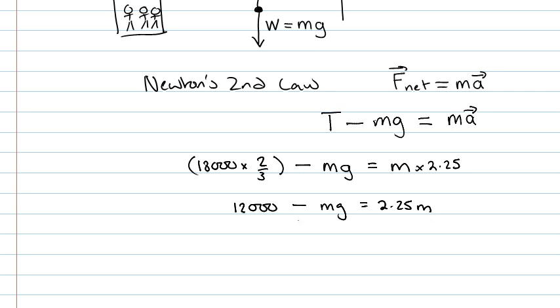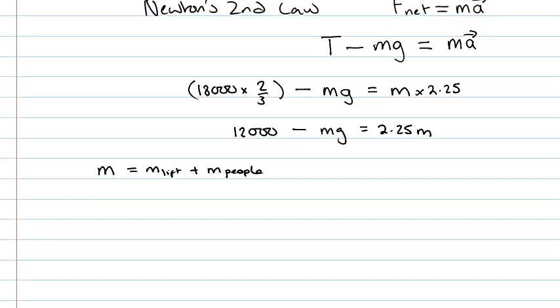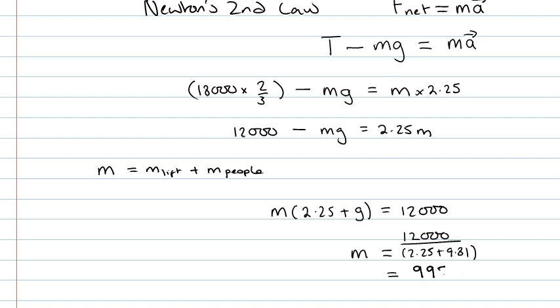And what we're trying to find here is the mass m. So this m is the mass of the whole system, so that's going to be the mass of the lift plus the mass of the people in the lift. So as we're trying to find m, let's rearrange that equation. So that would give us m times 2.25 plus g equals 12,000. And now g is 9.81. So if we rearrange that, that gives us that m equals 12,000 divided by 2.25 plus 9.81, which equals 995 kilograms.